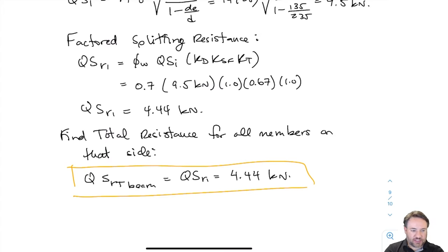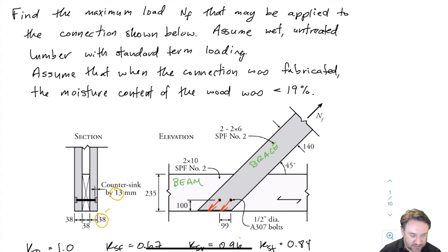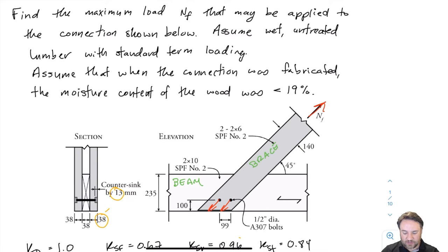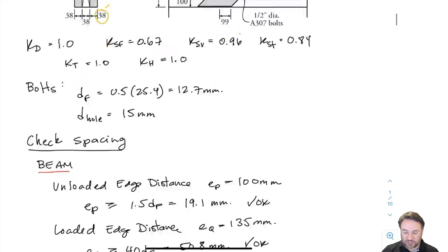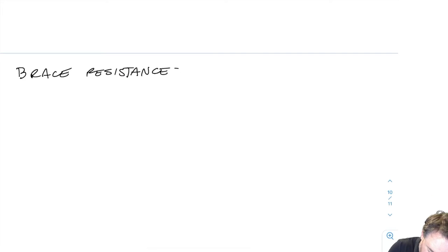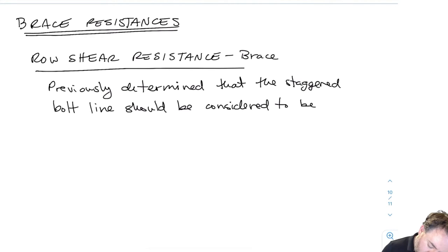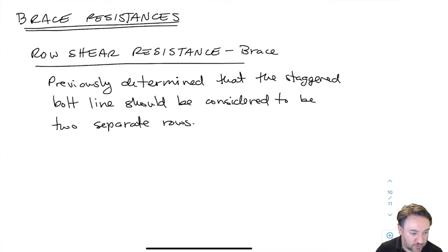Now we switch gears and look at the brace side of the connection — doing all brace resistances starting with row shear, then group tearout, then net tension. For the brace we only have loads in the parallel-to-grain direction, because the bolt loads on the brace always align with the grain. So we won't have any splitting possibility in the brace, which reduces our checks, although we do add group tearout this time.